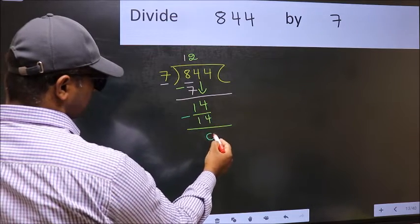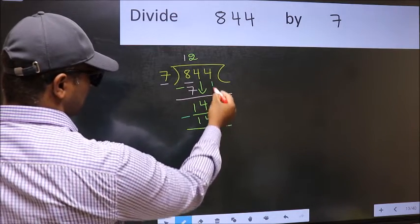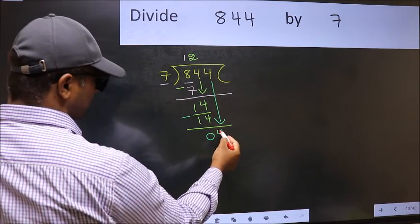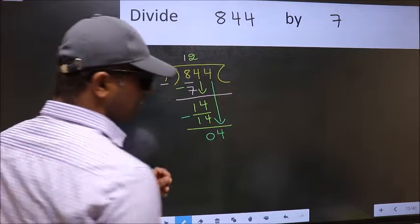14 minus 14, zero. After this, bring down the beside number, so 4 down. After this step, the mistake happens.